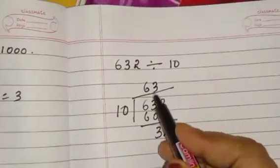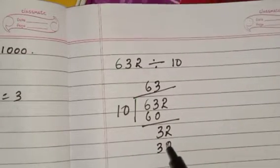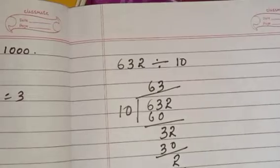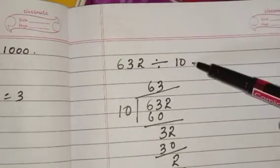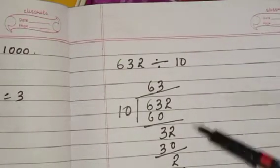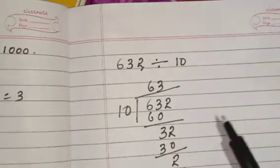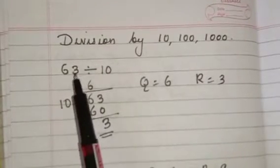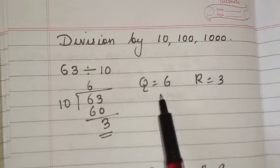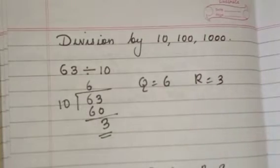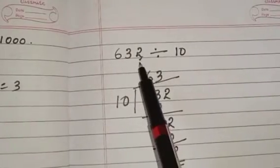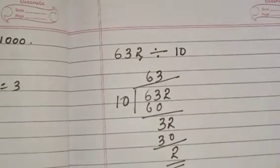So the remainder is 32. In this question also, if you divide by 10, the remainder will be the one-digit last number. Same way as the first question: if you divide 63 by 10, the remainder will be 3 and the quotient will be 6. For 632, the remainder will be the last digit and the first two numbers are the quotient. So we can do the textbook activity.